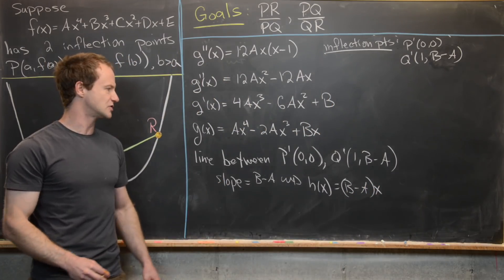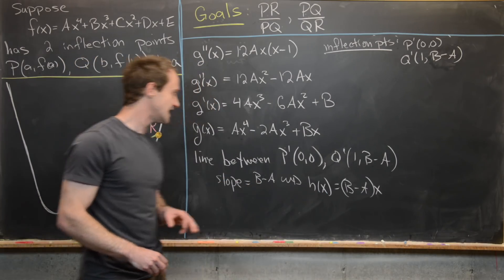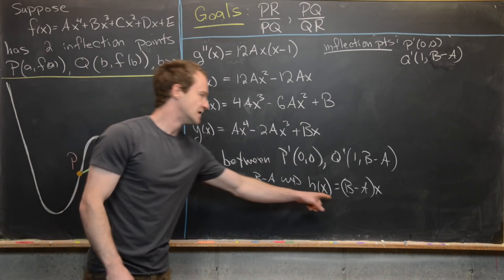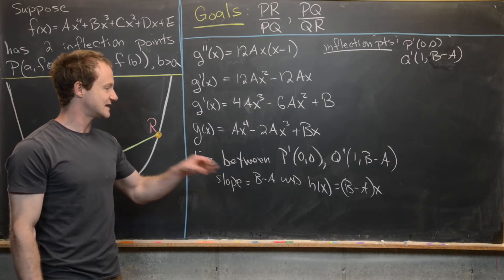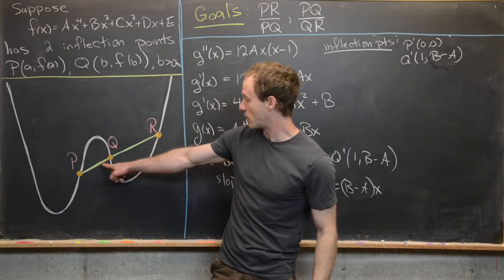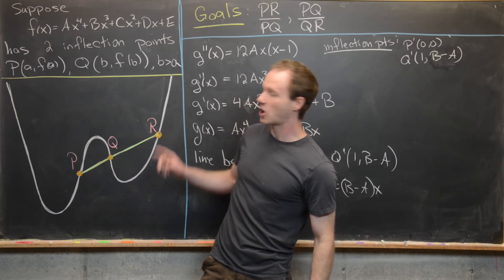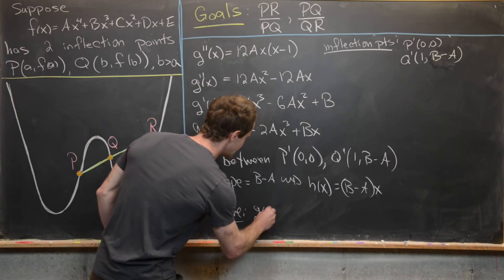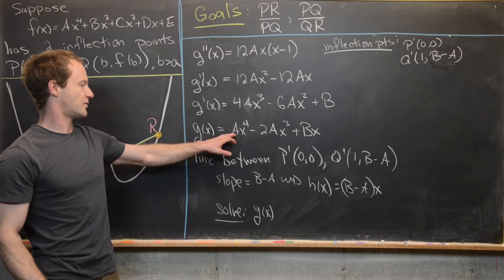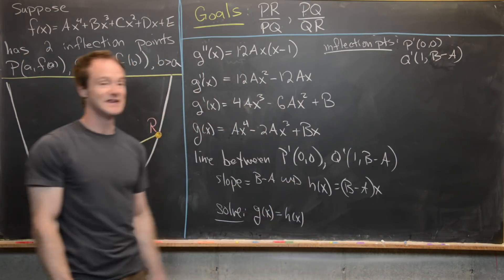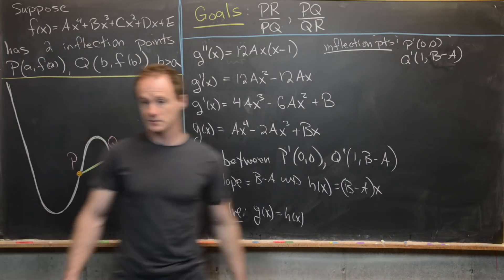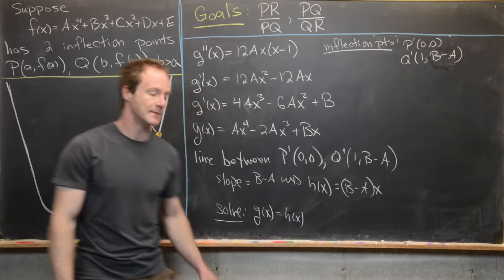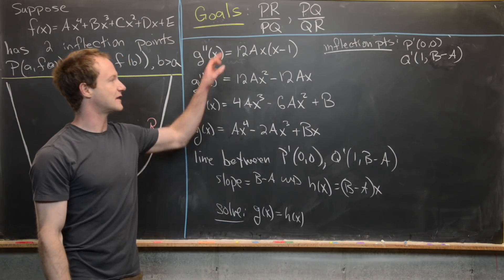Now we find the intersection of the secant line with the curve by solving G(x) = H(x). Since G goes through the origin and H is the secant line, there will be two intersection points. We'll keep the larger intersection point.